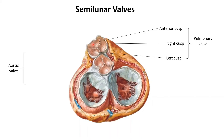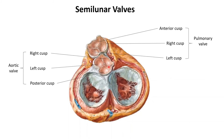The aortic valve also has three parts: a right, a left, and a posterior cusp. An easy way to remember this is that the pulmonary trunk was anterior so it has an anterior cusp, and the aortic valve was posterior so it has a posterior cusp. Like the AV valves, the semilunar valves also have free margins and attached margins.